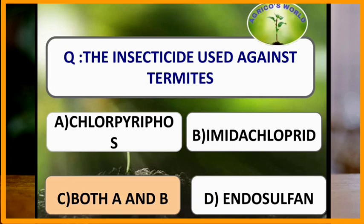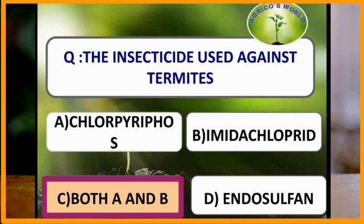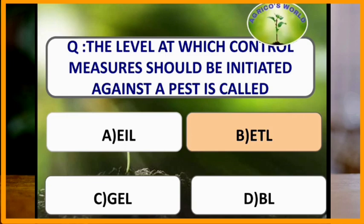The insecticides used against termites are chlorpyrifos and imidacloprid. Both are insecticides used against termites.